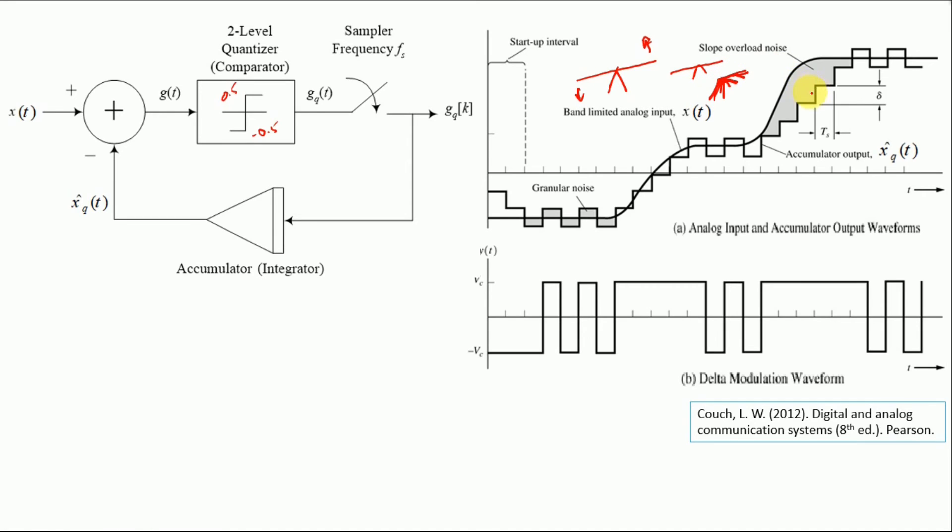But we can break this see-saw by inducing an adaptive step size. So over here it will become small and over here the step size will be higher. And for this we would need some kind of a control mechanism to adjust the amplitudes of this comparator.